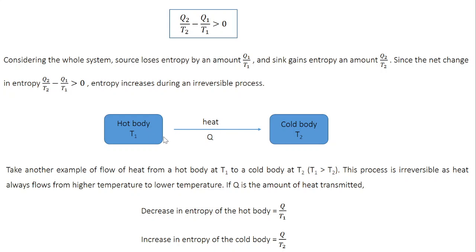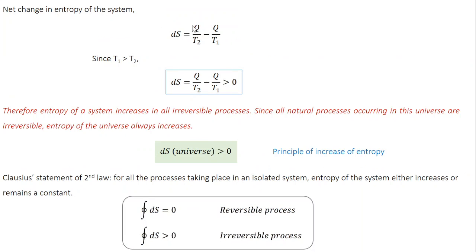The hot body loses heat by an amount Q, so the decrease in entropy of the hot body is Q divided by T1. The cold body gains heat Q, so the increase in entropy of the cold body is Q divided by T2. The net change in entropy, DS, is the total gain minus total loss: Q by T2 minus Q by T1. Since T1 is greater than T2, Q by T2 is greater than Q by T1, so the change in entropy is once again greater than zero. We conclude that for any irreversible process, the entropy of the system always increases.